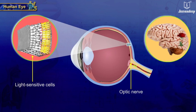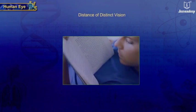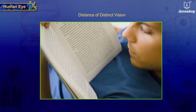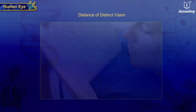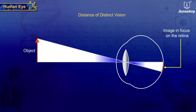Distance of distinct vision: We cannot read the words in a book if it is held very close to our eyes. The minimum distance for a normal eye at which an object can be seen clearly and distinctly without any strain on the eye is called the distance of distinct vision.